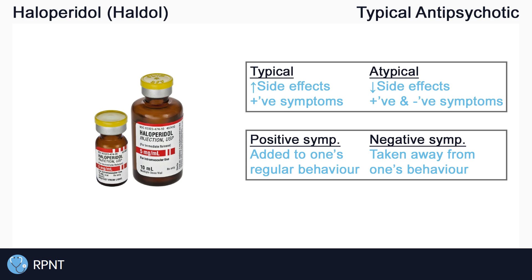Atypical antipsychotics, also known as second generation antipsychotics, are the newer and generally safer options that show fewer side effects. They can be used in the treatment of both positive and negative symptoms of schizophrenia. Negative symptoms are things that are taken away from regular behaviors, such as apathy and flat affect.